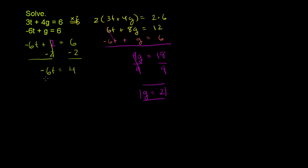Now I can divide both sides of this equation by negative 6. And we're left with t is equal to negative 2 thirds. And we're done.